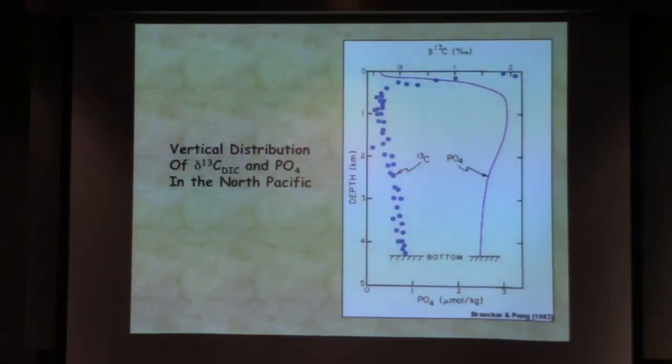But let's take a look deeper in the ocean. So what this plot is showing you is the North Pacific. It's a data set showing you in the blue dots the delta C-13 of DIC. You can see that the delta C-13 of inorganic carbon is high at the surface and progressively gets lower as you move down through the water column.